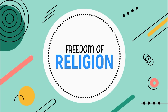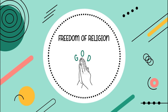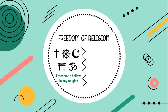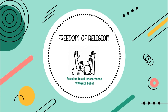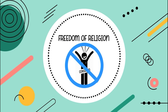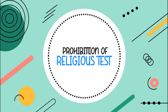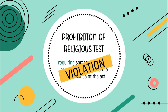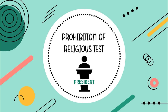Another right is the freedom of religion — the right of an individual to worship God without interference from any person or power. There are two aspects: first, the freedom to believe in any religion; second, the freedom to act in accordance with such belief. This is not an absolute right and is subject to the rules and laws of the state. For example, no one can appear nude in public in the name of religion. The Bill of Rights also prohibits religious tests, which require someone to have a religious belief before performing an act. This is a violation of freedom of religion — for example, requiring that candidates running for president be Roman Catholic only.